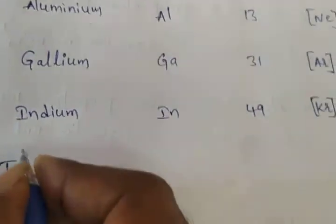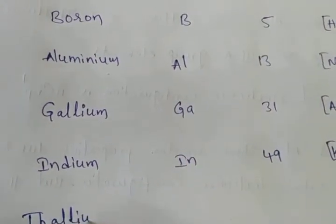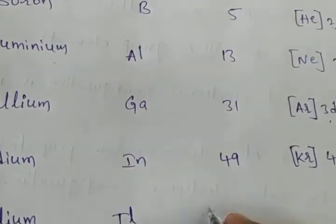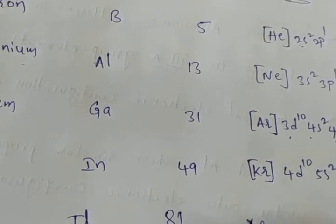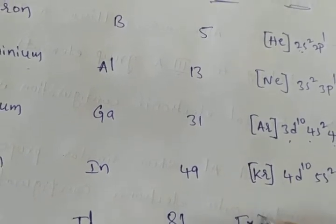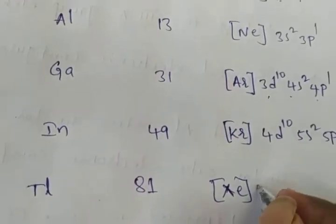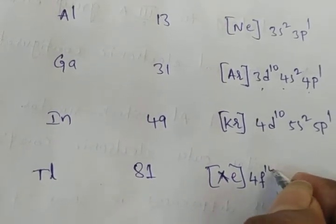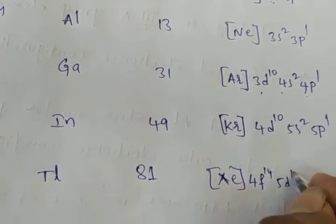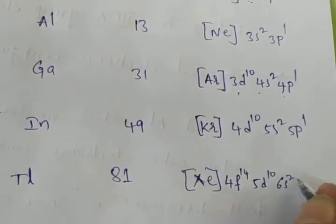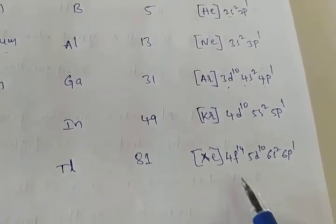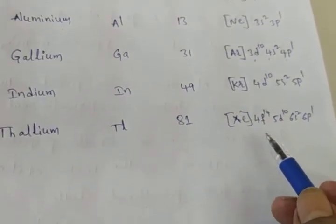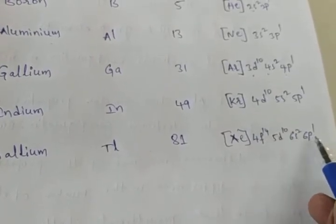The last element in the group is thallium. The symbol of thallium is Tl and the atomic number is 81. The electronic configuration is [Xe] 4f¹⁴ 5d¹⁰ 6s² 6p¹.